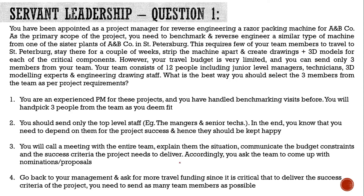We will start by studying the answer choices. It is very important to study each option carefully and you need to reject an option only on solid grounds. Never reject an option just because it doesn't feel or sound right. Option number one is essentially telling you that you decide for your team and roll it out accordingly. As we learned, this is not a servant leadership behavior. A servant leader never decides for the team and rolls it out by himself. Hence this option is a wrong option.